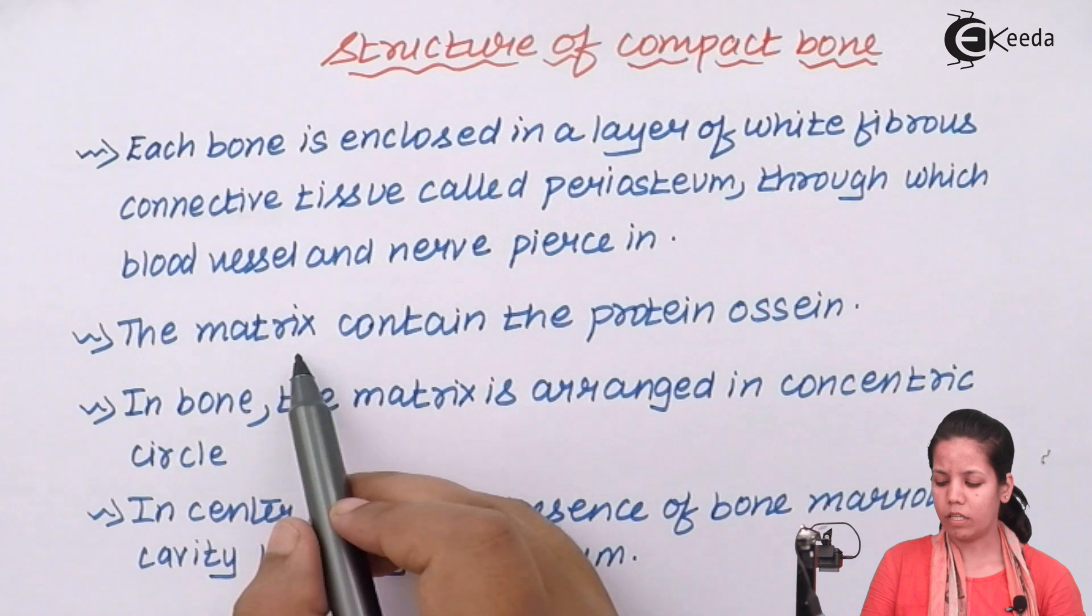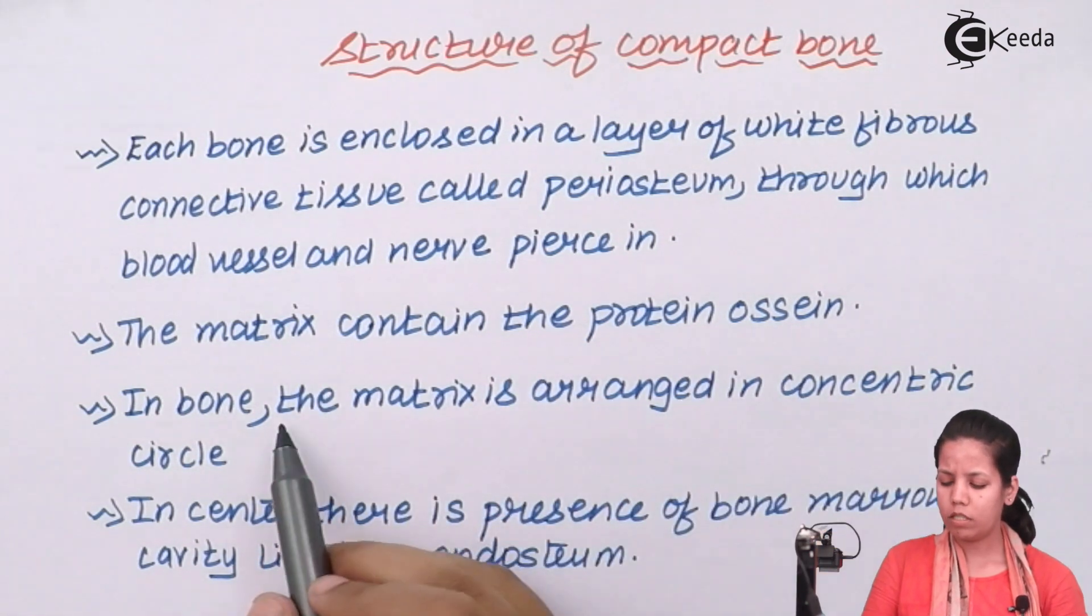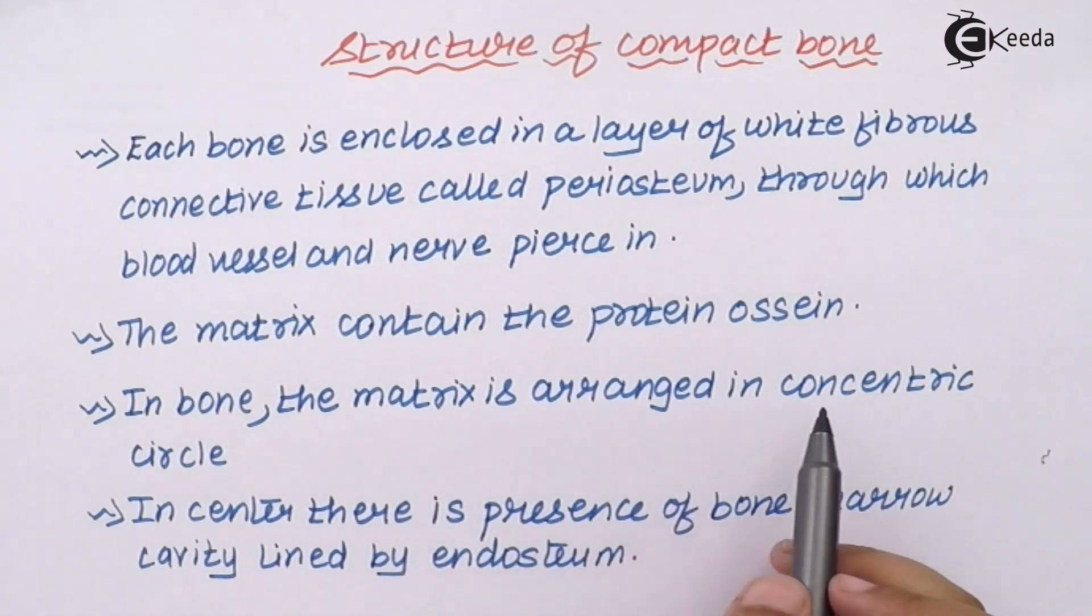They also contain matrix which has protein ossein. In bones, the matrix is basically arranged in concentric circles. In center there is a presence of bone marrow in this bone structure that's lined by a cavity which is termed as endosteal.